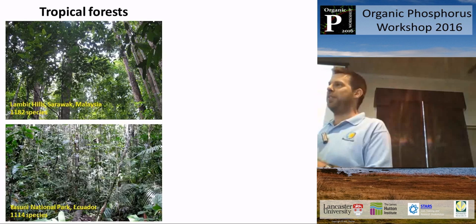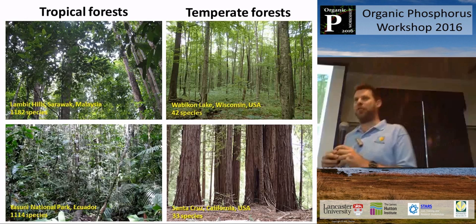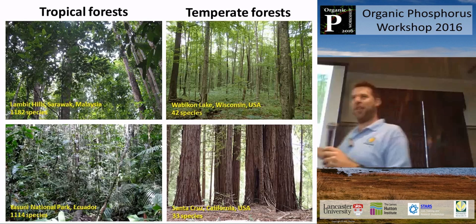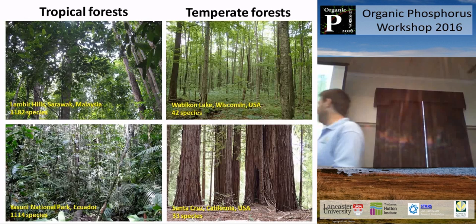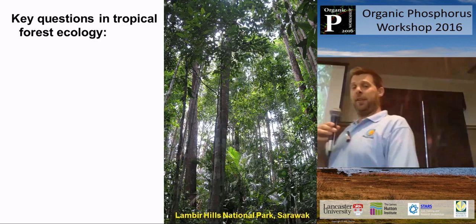Effectively we have the equivalent of the entire temperate tree flora in diversity within the size of a few football fields in these forests. When we compare that to equivalent plots in the USA — at Wabikon Lake in Wisconsin and in the Redwood Forest in California — those plots of about the same size have 40 species and 30 species respectively. So you can see this massive difference. It's not to pick on the Americans; it's typical of temperate forests worldwide, but it illustrates the real challenge we face in studying tropical forests.